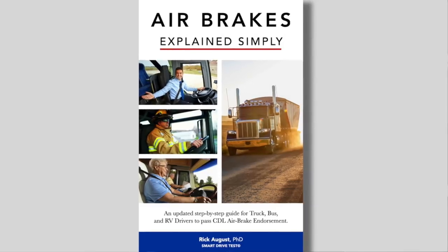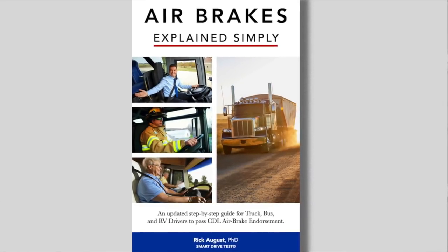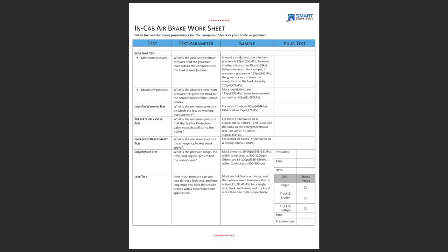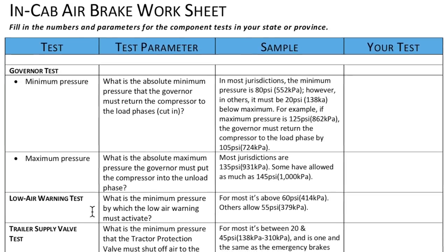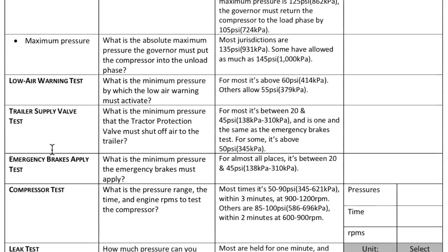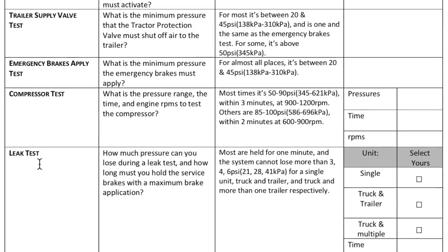What we're going to do is pull up some of the CDL manuals from different states in the United States, go through the manual, show you how easy it is to search and find the specific numbers for your state, put them on the checklist, and transfer them to your flashcards. Over at Smart Drive Test we've also released CDL Air Brakes Explained Simply, a manual to help you pass your CDL air brakes test — find the link in the description. Looking at the worksheet, the five in-cab air brake checks are: the governor test, the low air warning test, testing emergency brakes between 20 and 45 PSI, the compressor test, and the leak test.